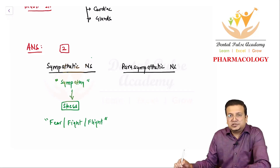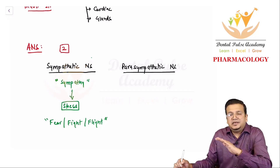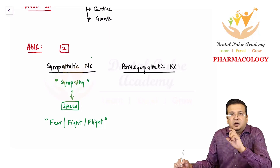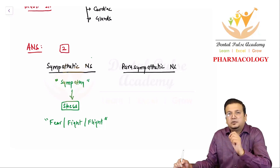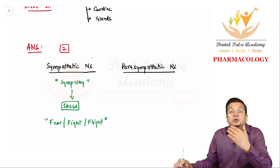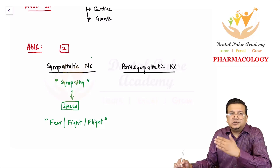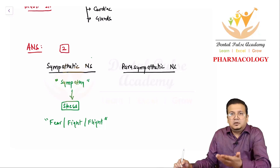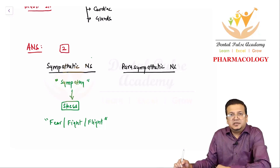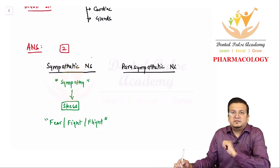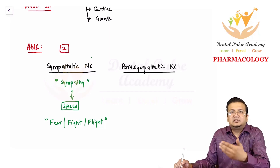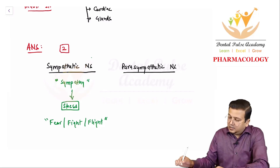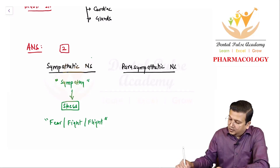Fear, fight, and flight represent stressful situations. Whenever the body is under any kind of stressful situation, the sympathetic nervous system becomes active. The moment the stressful situation is over, activity of the sympathetic system will decline, and some other part of the ANS will become active — that is called the parasympathetic nervous system.